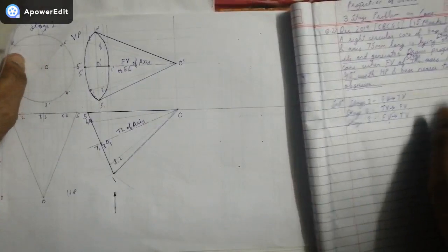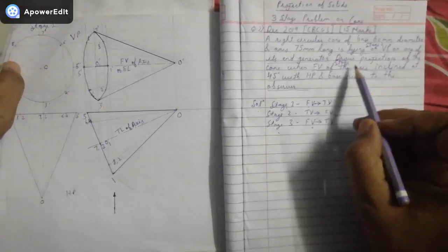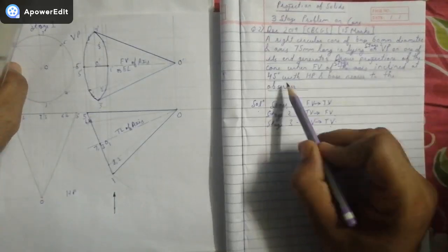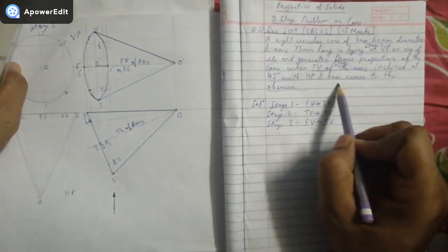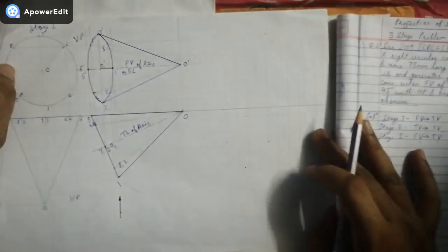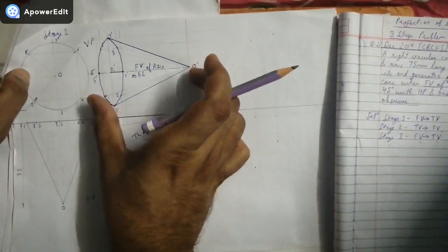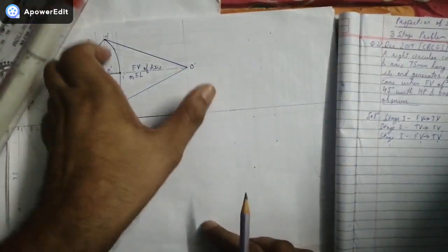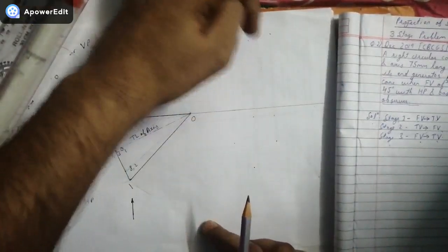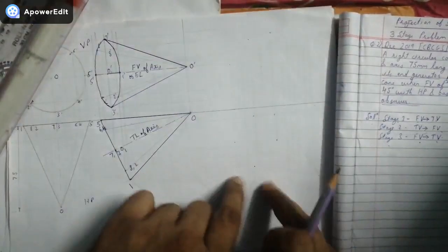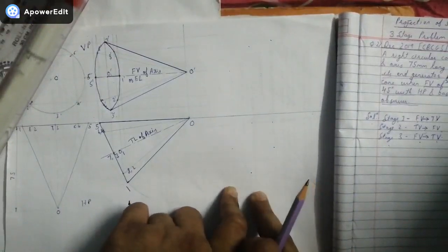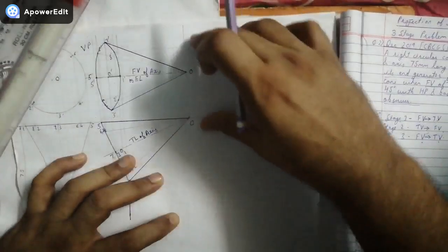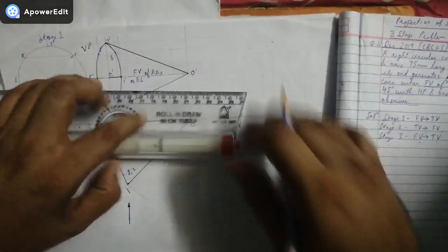Now for stage 3: draw projections of the cone when the front view of the axis is inclined at 45 degrees with HP and the base is nearer to the observer. This cone can be tilted either way, and we will tilt it so that in the finishing top view the base is nearer to the observer. That is why it will be tilted in this direction.